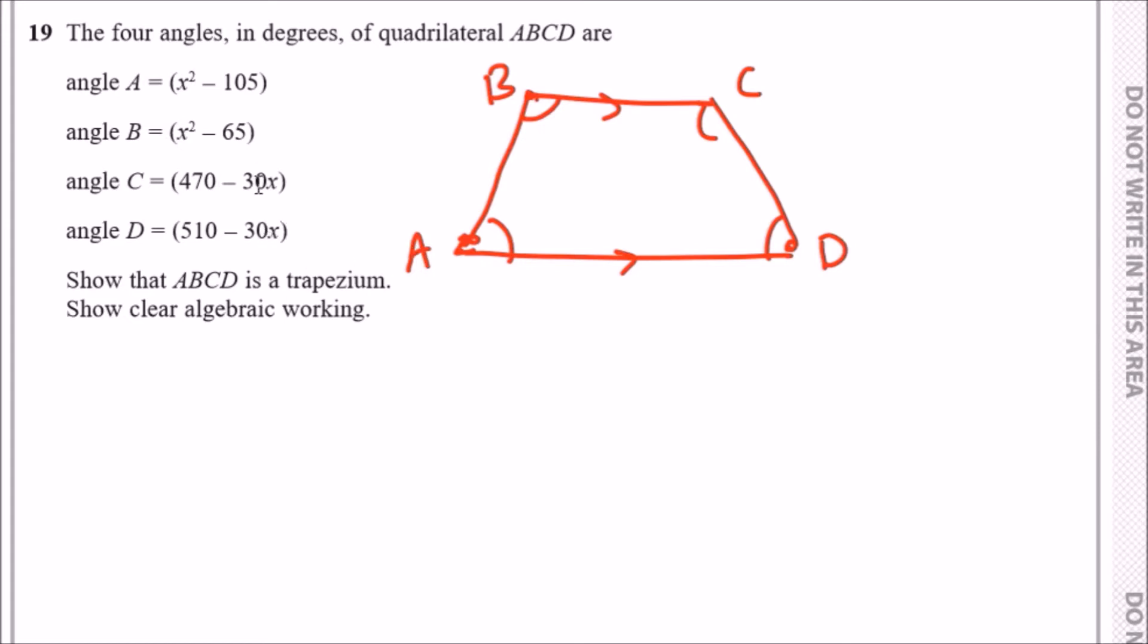First, we need to find the value of x to satisfy this. To do this, we need to realize that in a four-sided shape all angles must add up to 360 degrees.